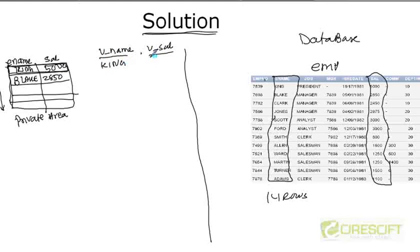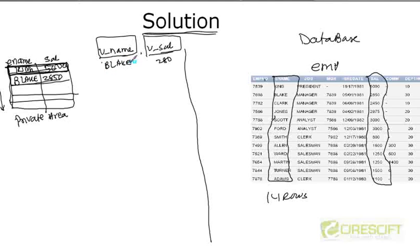The first time, the value becomes KING and 1000. I fetch one row at a time from this private SQL area to the temporary variable. Once I fetch the first row, I can manipulate it however I want. Then I fetch the second row — v_name becomes BLAKE and salary becomes 2850. I keep fetching from this private SQL area to the temporary variable until I am done with all the rows.